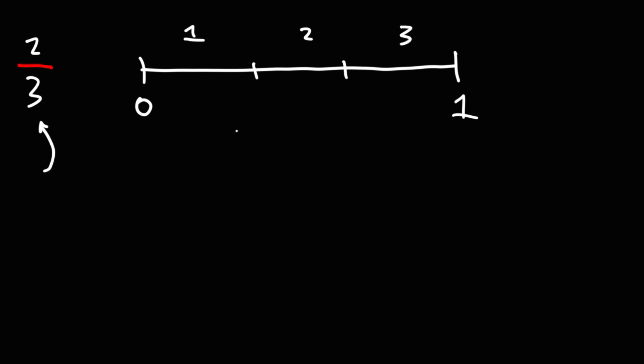1, 2, 3. Now, the value of the first mark is 1 over 3. 0 is the same as 0 over 3. The next one is 2 over 3, and 1 is equivalent to 3 over 3. So 2 over 3 will be right here at this point.